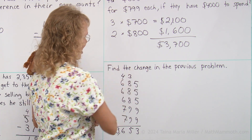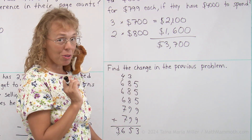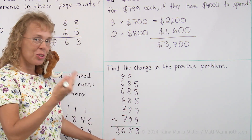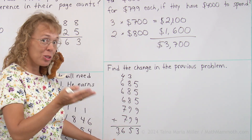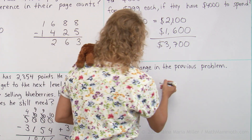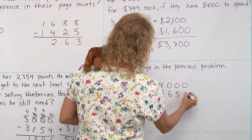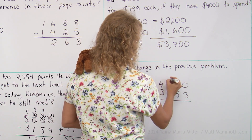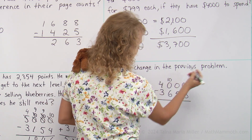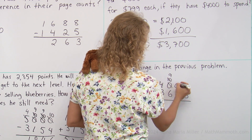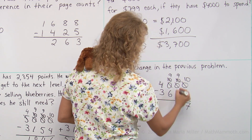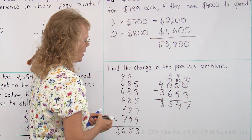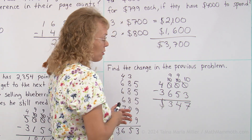Now find the change. They pay with $4000 and the total cost is here, so we need to subtract. Again, these strings of 10s and 9s from regrouping. The change is $347.